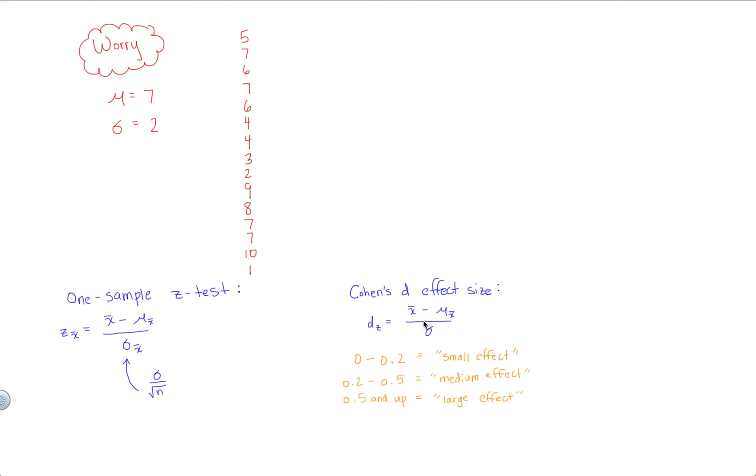So d sub z equals x bar minus mu, our sample mean minus our population mean. Notice the numerator is the same as it is in the actual hypothesis test. It's where the denominator changes. So in the denominator for an effect size, we just have a measure of variability and not standard error. So in this case, we have standard deviation.